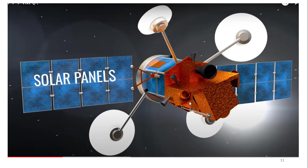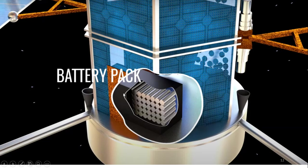These satellites work through solar panels during the daytime. But when they are away from the sun, they store the power in a battery pack and then operate using that stored power.